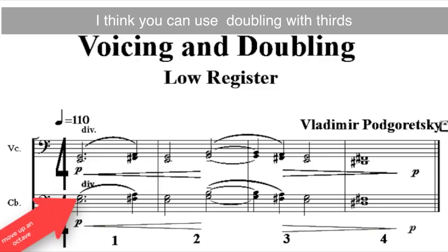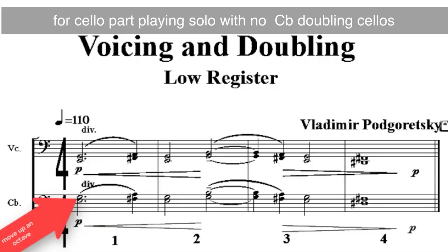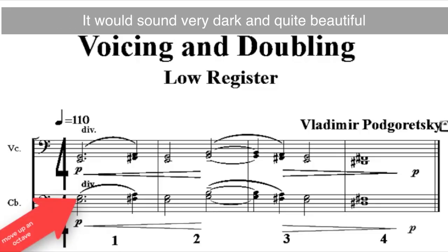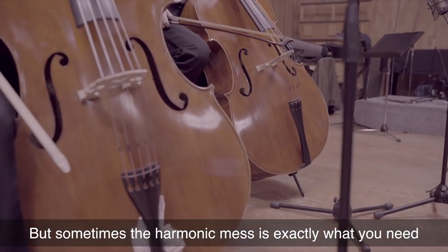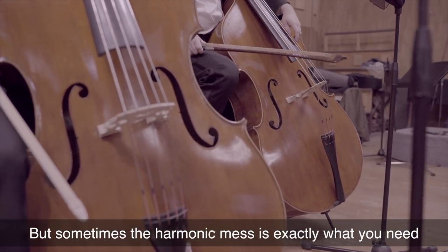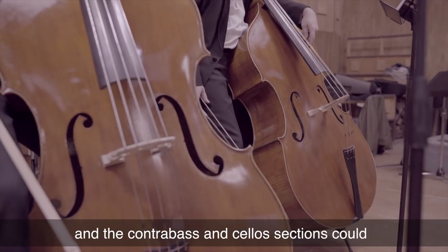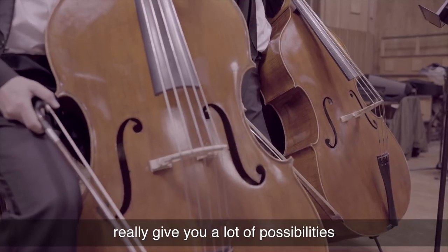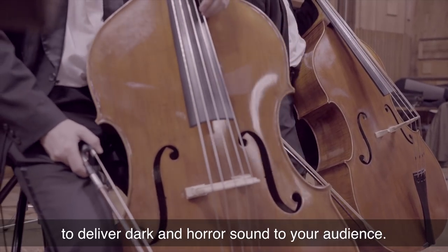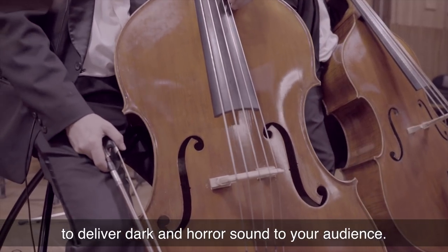I think you can use this doubling with thirds for a cello part playing solo with no contrabass doubling. It would sound very dark and quite beautiful, but if you want to put any other voices on top, it will make a huge harmonic mass and you will not be able to hear the melody at all. But sometimes the harmonic mass is exactly what you need — the contrabass and cellos section can really give you a lot of possibilities to deliver a dark and horror sound to your audience.